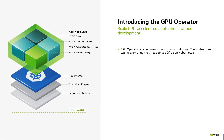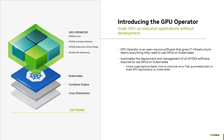Let's explore how NVIDIA is able to bring the power of GPUs to Kubernetes environments. GPU Operator is open-source software that gives IT infrastructure teams everything they need to use GPUs on Kubernetes. It does this by automating the deployment and management of all NVIDIA software required to use GPUs on Kubernetes, allowing organizations faster time-to-outcome and an error-free, automated path to scaling their GPU-accelerated applications. Let's examine how the GPU Operator benefits Kubernetes environments.